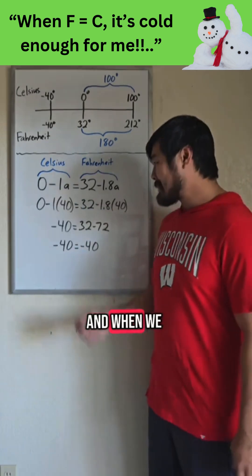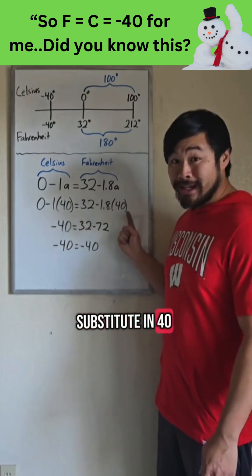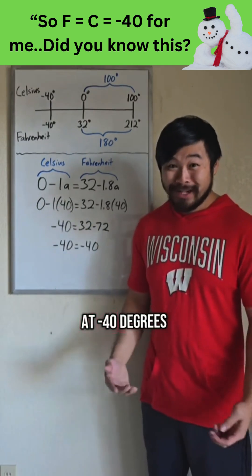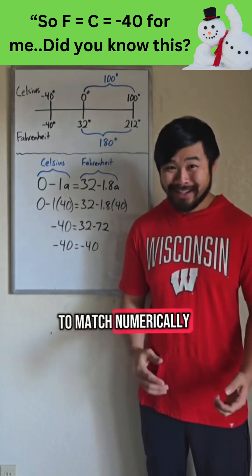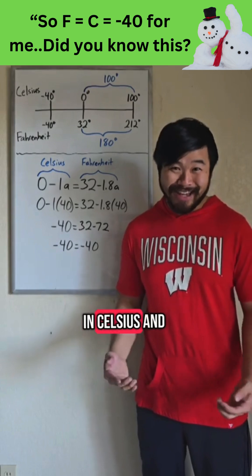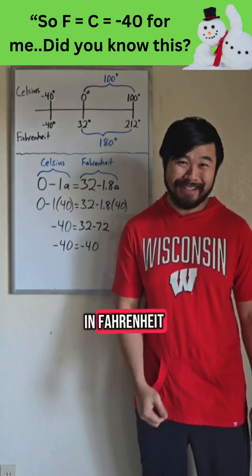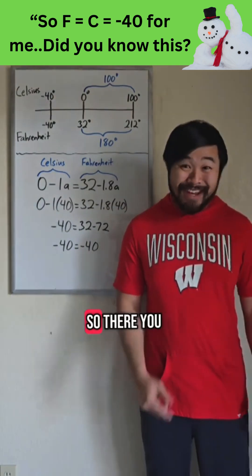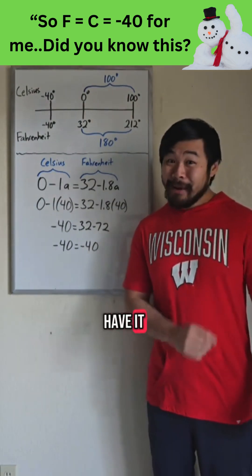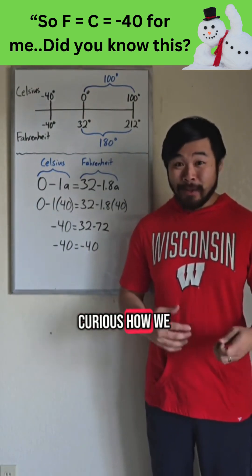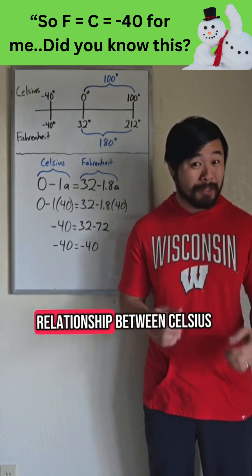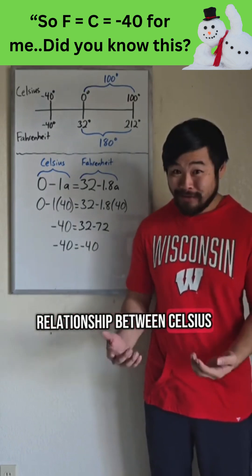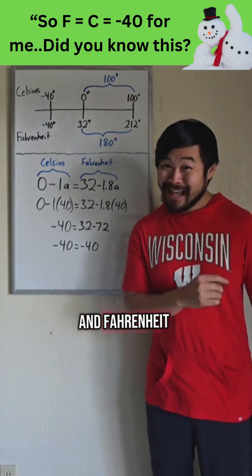When we substitute in 40, we see that it would be at negative 40 degrees for the temperatures to match numerically in Celsius and in Fahrenheit. So there you have it. Now you might be curious how we can write an equation to represent the relationship between Celsius and Fahrenheit — that will be for another video.